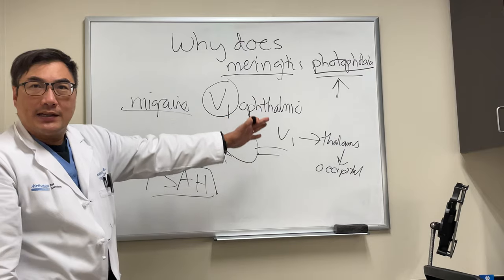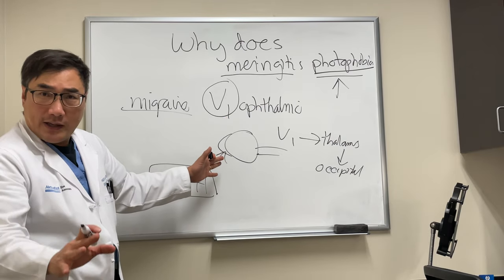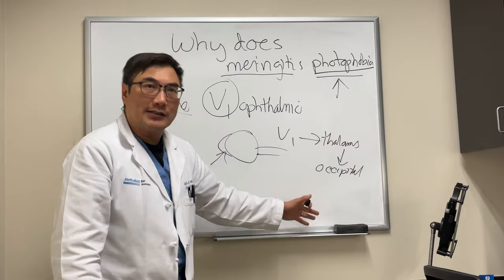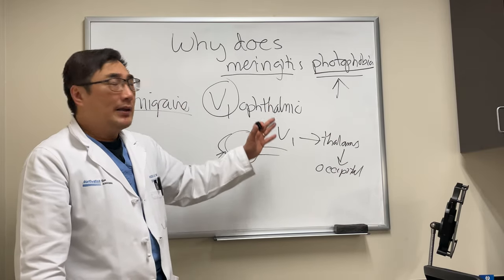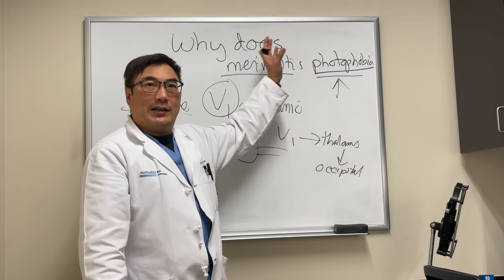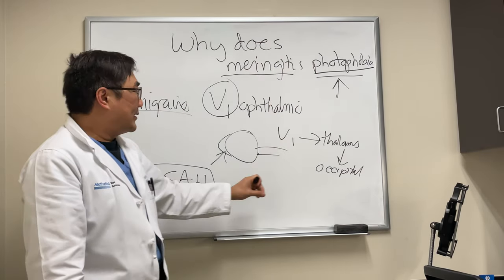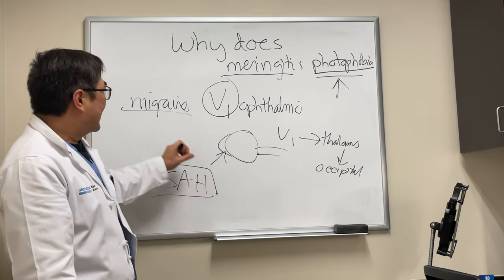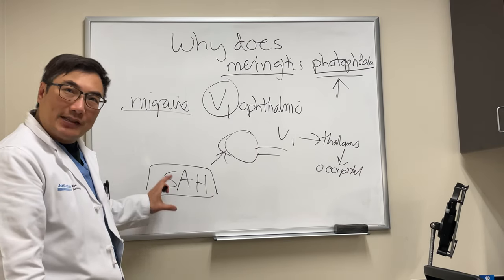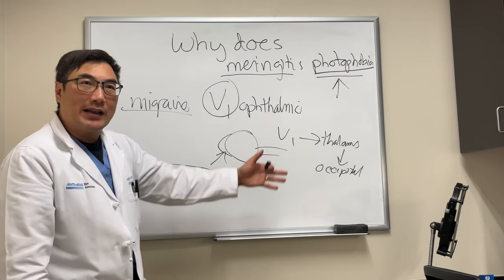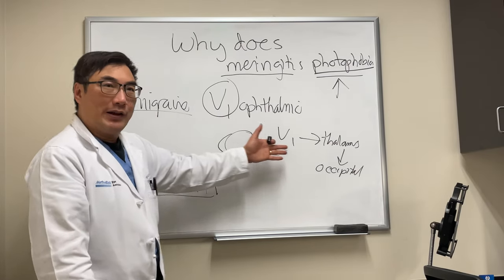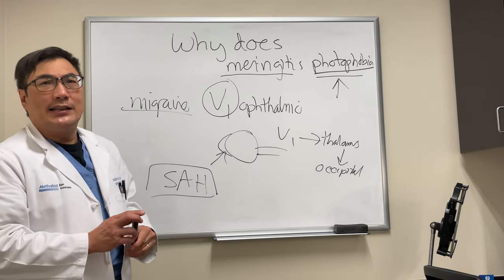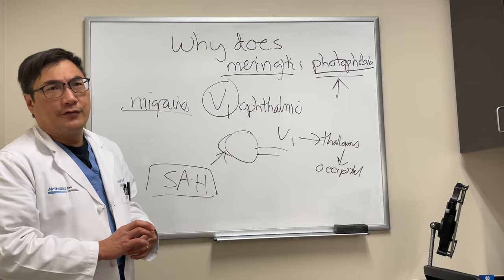The unifying mechanism is the trigeminal — a trigeminal-thalamic-occipital pathway — unifying photophobia and meningitis, and uveitis, and corneal disease, and migraine, and subarachnoid hemorrhage. A unifying pathway, a final common pathway, that leads to the subjective symptom of photophobia. Thank you.